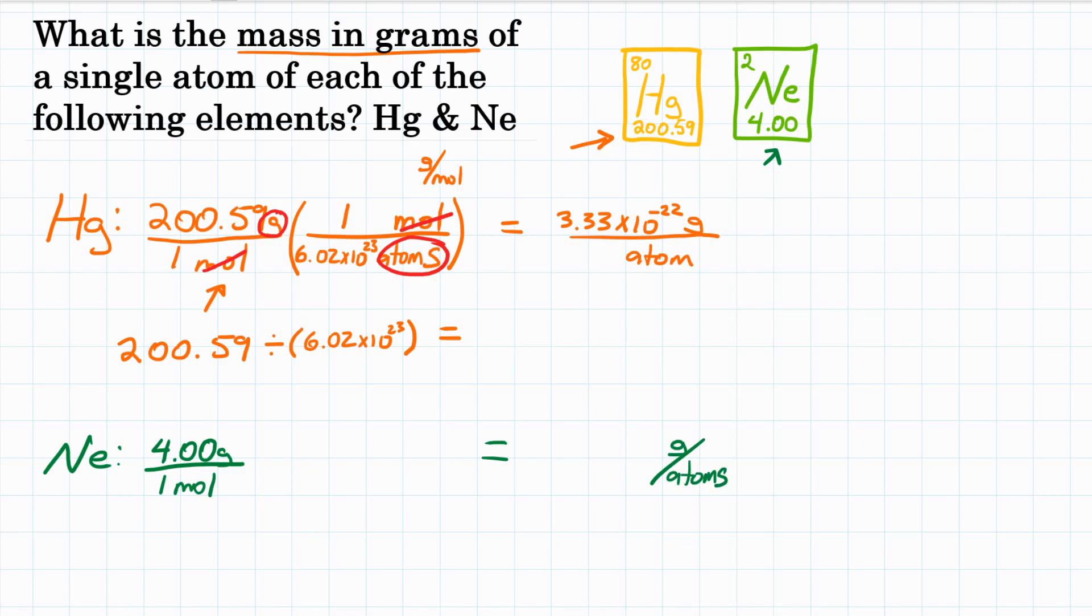Grams per atom. So we're going to convert here again. And remember, moles is on bottom of what we're starting with. So we want moles on top of our conversion factor to get rid of it, to cancel it out. And atoms on bottom, because we want that on bottom for our answer. We want grams per atom. So now we need the relationship between moles and atoms. Well, it doesn't matter what we're talking about, 1 mole is the same number, 6.02 times 10 to the 23rd.